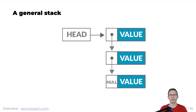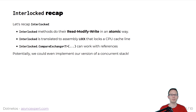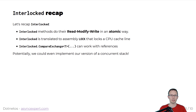A concurrent stack basically has a single head and then it is followed by a linked list of nodes. Every single node holds the value and the pointer or reference to another node. Before we dive into the algorithm and the problem, let's recap interlocked for a while. Interlocked provides us methods to do read, modify, write — meaning read the value, increment it, and then write it back in an atomic way. Every single interlocked operation, whether it's compare exchange, exchange, increment, decrement, or add, is translated to an assembly instruction that locks a specific CPU cache line for x86 architecture.